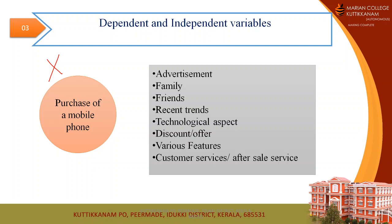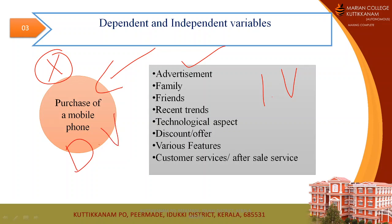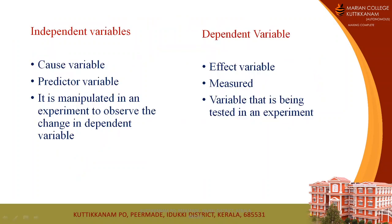After analyzing these factors, you will finally decide which particular brand to purchase. These factors will affect your decision of purchasing a mobile phone, so the factors are considered as the independent variable, while your purchase decision acts as the dependent variable. The independent variable acts as the cause that leads to your purchase decision. The independent variable is also called the cause variable or predictor variable — it is manipulated in an experiment to observe the change in the dependent variable. The dependent variable is the effect variable that can be measured and tested in an experiment.